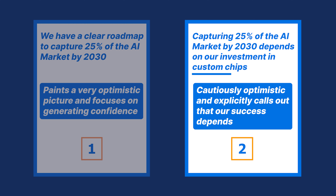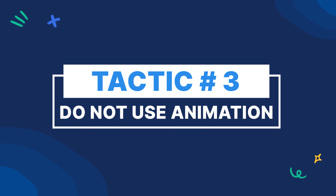The second one is cautiously optimistic and explicitly calls out that our successes depend on something — that is, custom chips. Now, if you're a decision maker in a company which requires chips, you'd probably go with option number two so you can ask for more resources. That's why this tactic is super sneaky.